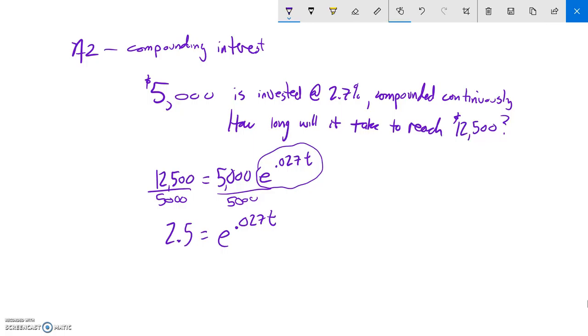The way that we undo e is natural log. So natural log of 2.5 equals 0.027 times T. Divide both sides by 0.027, and now I have natural log of 2.5 divided by 0.027.